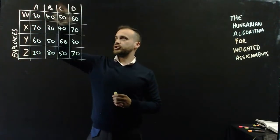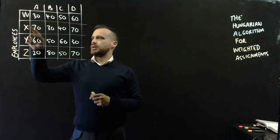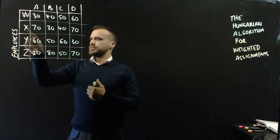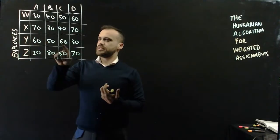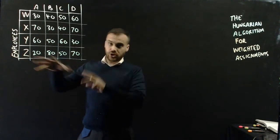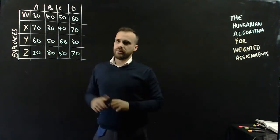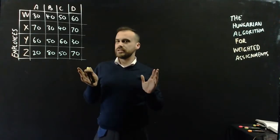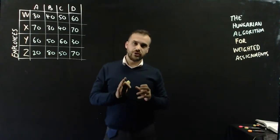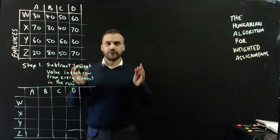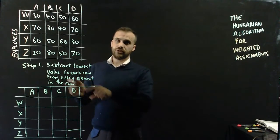Here's a table with employees and jobs. Wendy takes 30 minutes to do job A. Zenon takes 30 minutes to do job B. Yolanda takes 60 minutes to do job C, and so on. We're going to use the Hungarian algorithm to assign our employees. An algorithm is just a series of steps, so as long as you follow them you can't go too far wrong. Step one: subtract the lowest value in each row from every element in the row.